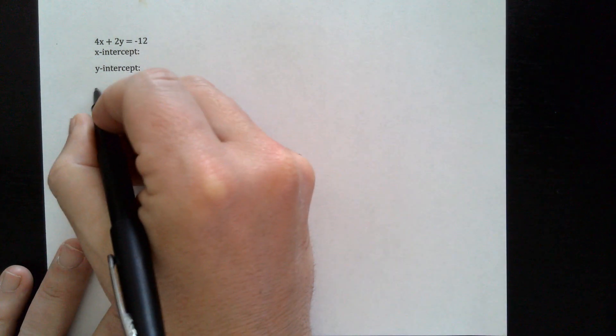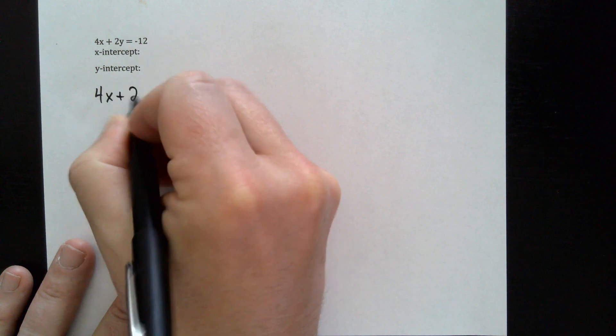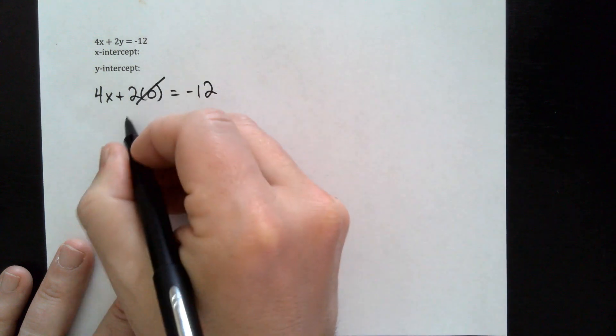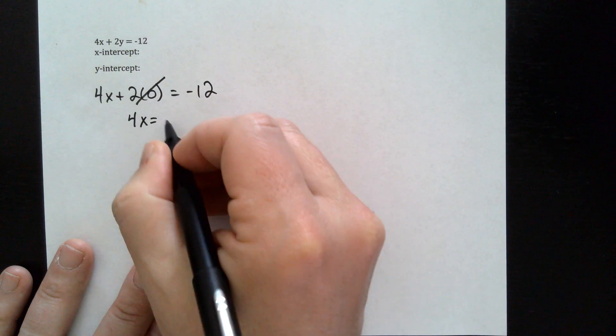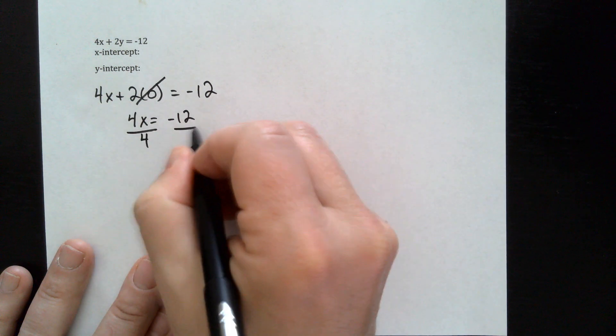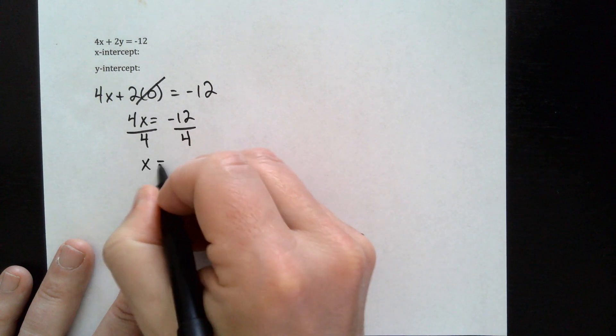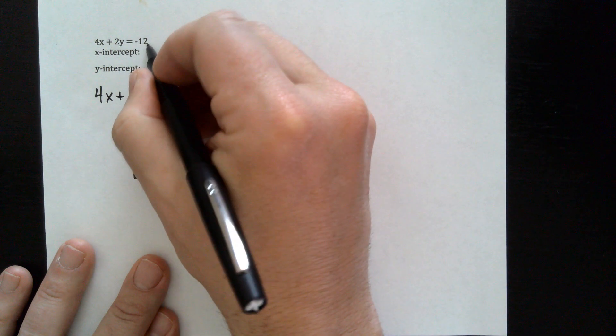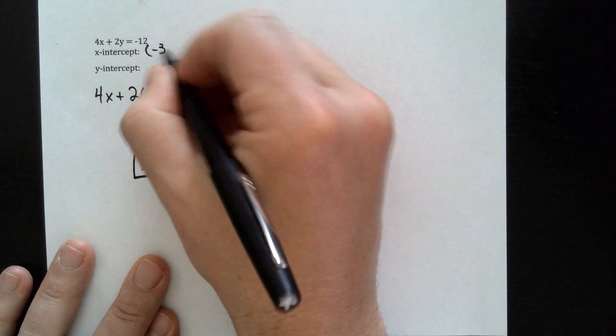Let's try this one. We've got 4x plus 2y equals negative 12. Let's do the x intercept first. So 4x plus two — I'll put a zero in for the y term — equals negative 12. That term goes away, so you get 4x equals negative 12. Dividing by four on both sides, I get x is equal to negative three. So that would correspond to the ordered pair negative three comma zero.